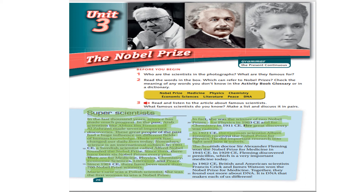The Scottish doctor Sir Alexander Fleming won the Nobel Prize for medicine, للطب. In 1929, Fleming discovered penicillin — اكتشف Filming البنسلين — which is a very important medicine today. He won the prize in 1945.